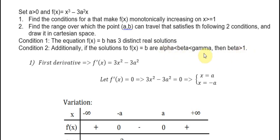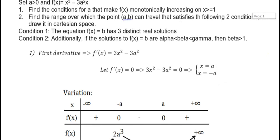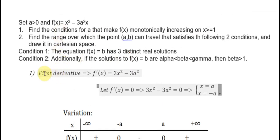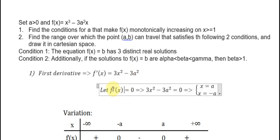It means that if we have three solutions, beta should be greater than 1. Here is my answer for question number 1. We need to find first the derivative of the function. We have s power 3 will give 3s power 2, minus 3a power 2 times s will give minus 3a power 2.